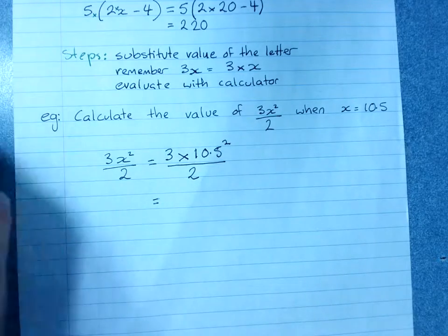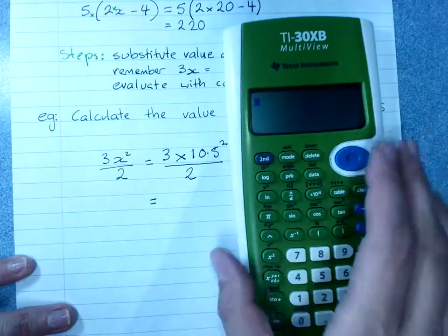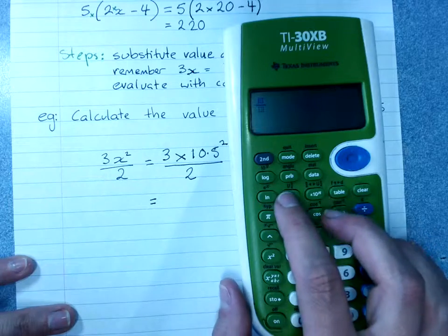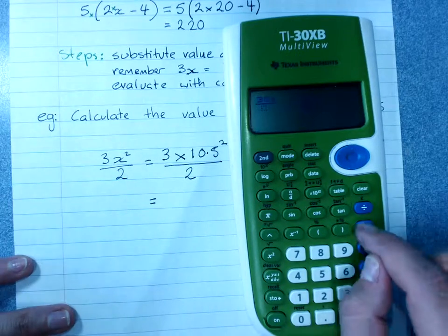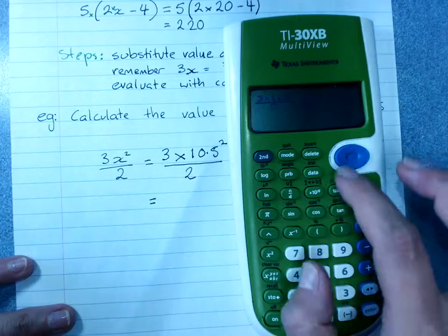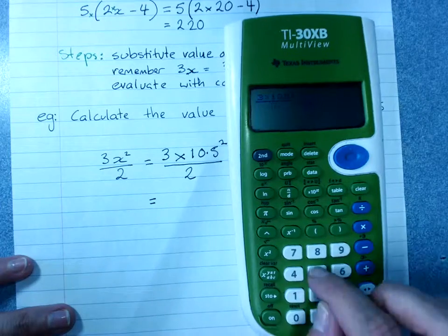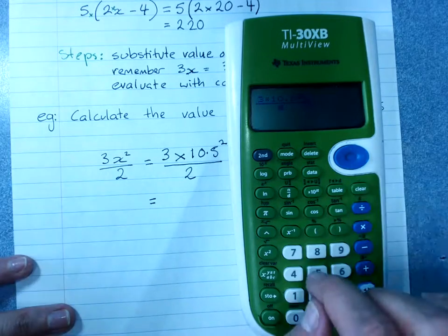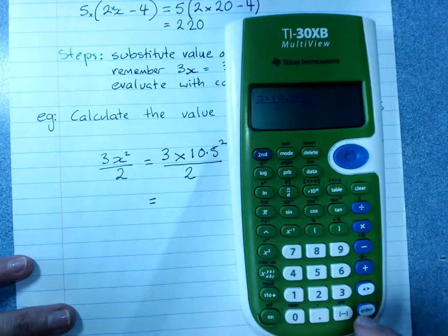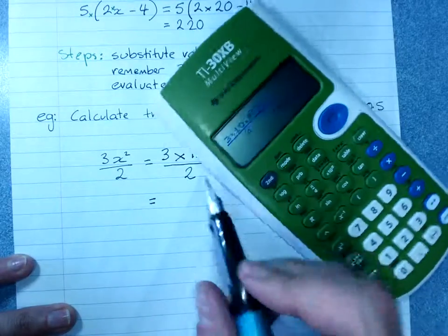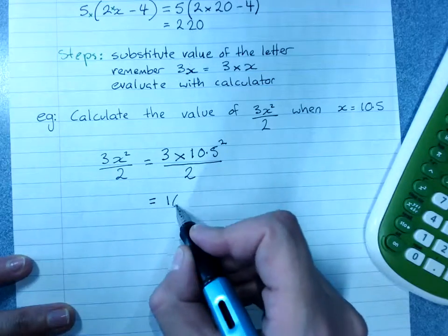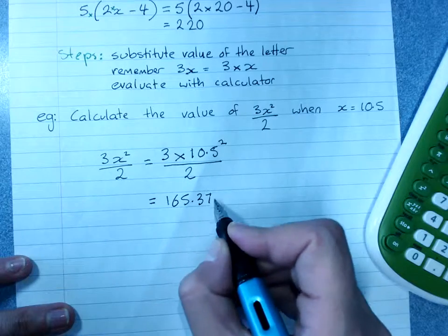Use your calculator for it. Use your fraction key. 3 times 10.5 squared over 2. And I've got 165.375.